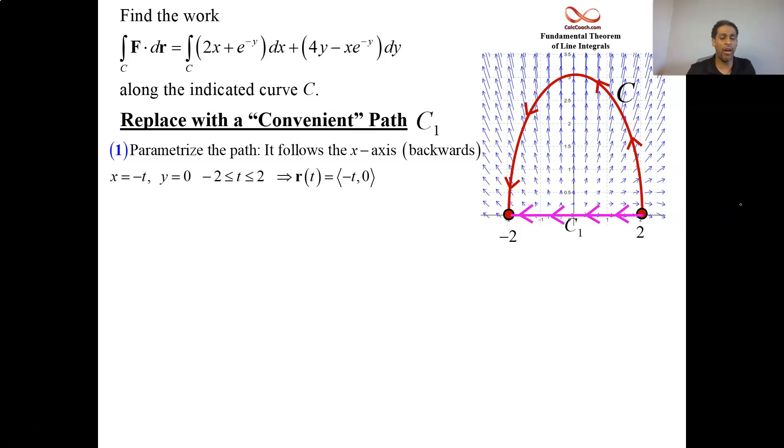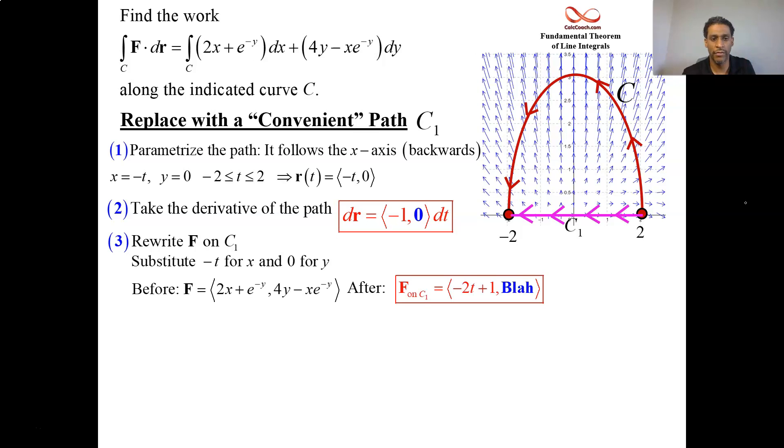So you plug these into a vector r. You take its derivative. You get dr. You apply f. You have to rewrite f on c1. So c1 is this new path here. Rewrite f. Replace all your x's with negative t's. Replace all your y's with zeros. So instead of 2x plus e to minus y, you're going to have negative 2t plus 1. And then for the next part, you don't even have to worry about what that is. It'll be 0 plus t. It'll be t.